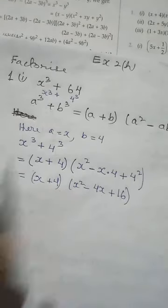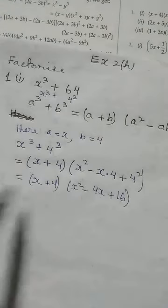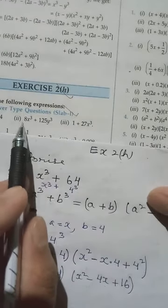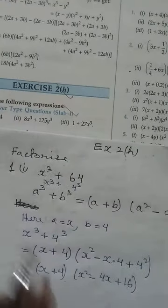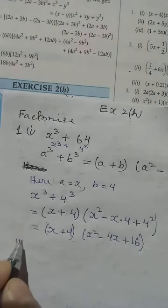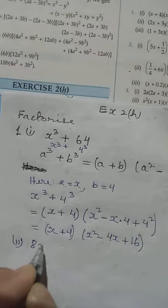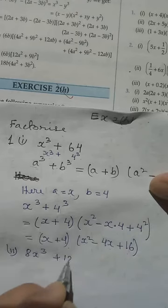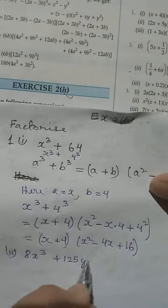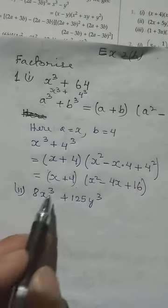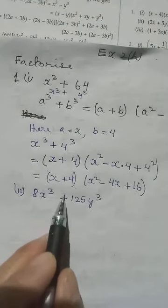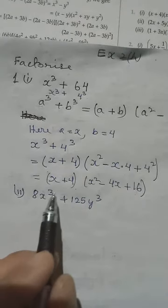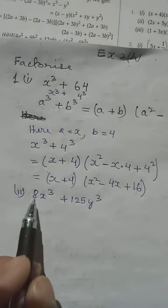So a cube plus b cube equals x plus 4, whole times x squared minus 4x plus 16. This is the required answer; after this we cannot simplify further. Next is number two — try number three as homework. For number two we have 8x to the power 3 plus 125y to the power 3. Here we have power 3 and power 3 along with plus, so we suspect the same formula.